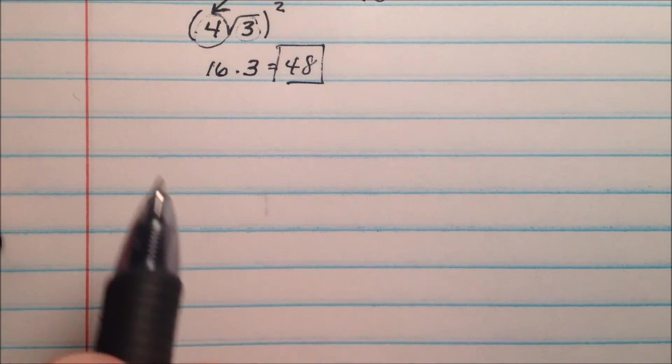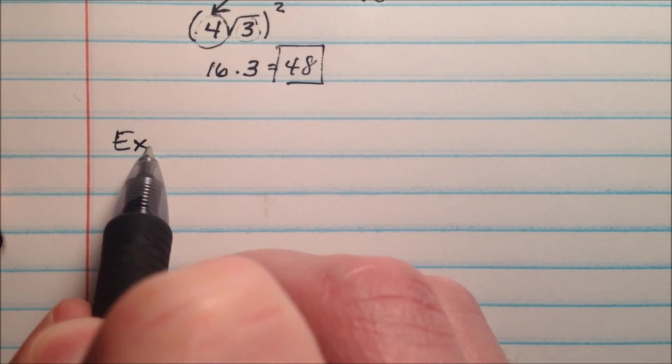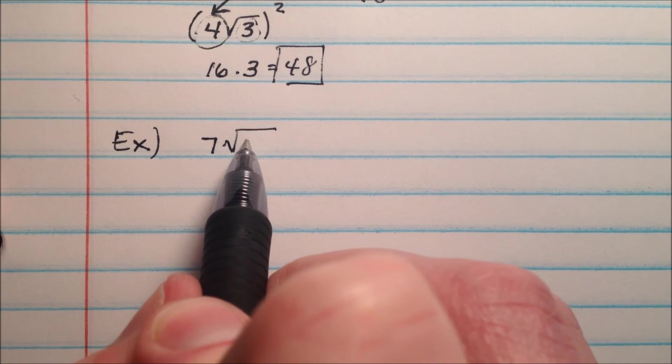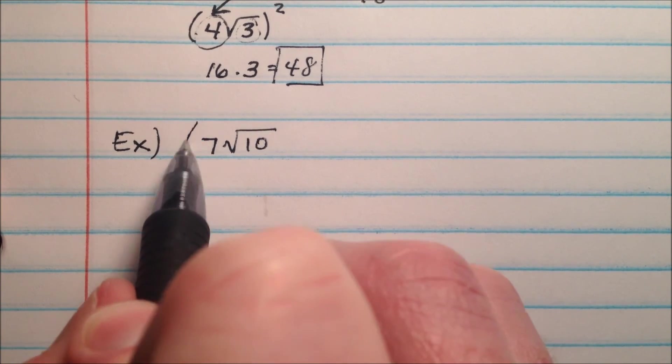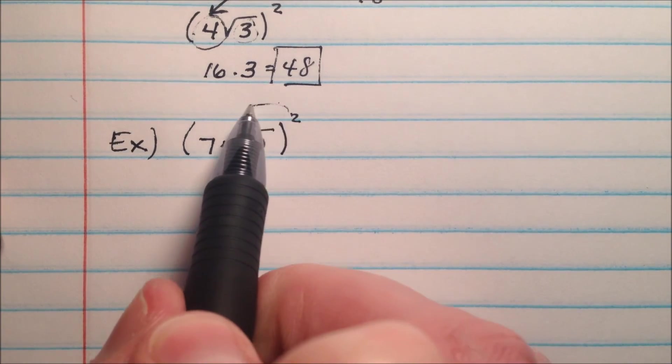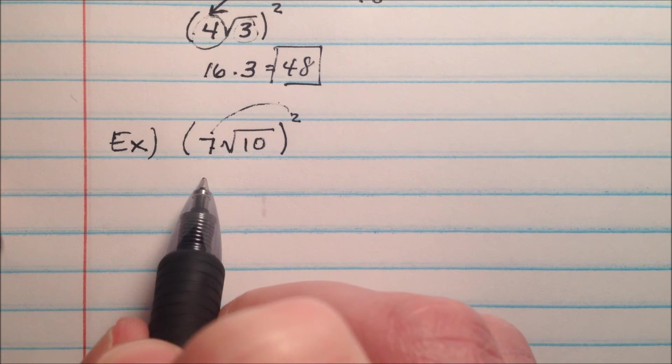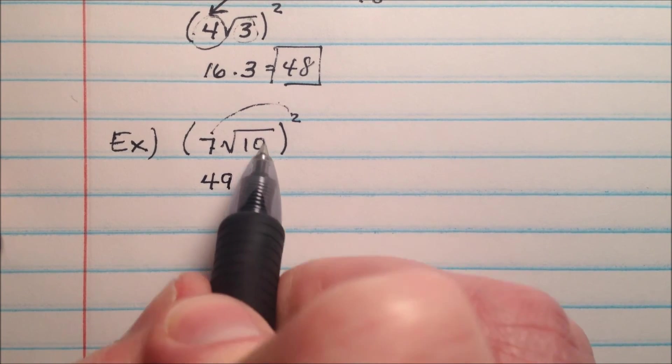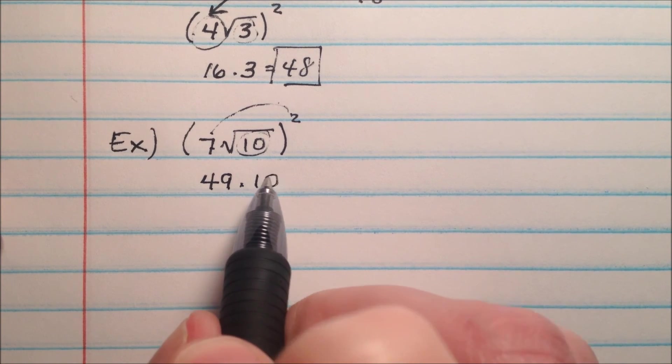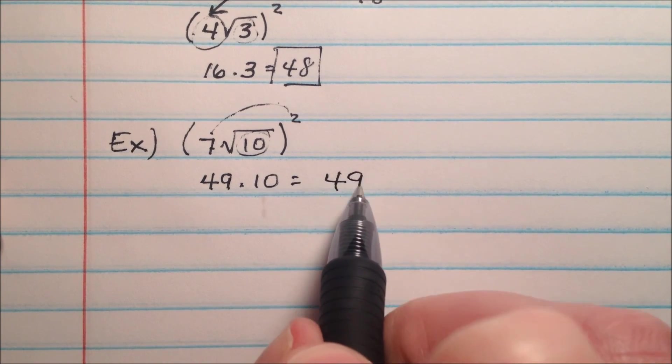Okay, let's look at a couple more examples. What if you had 7 times the square root of 10? And we want to square that. So we're going to square the whole part. 7 times 7 is 49 and we're going to multiply it by the number under the radical, 10, so that's going to give us 490.